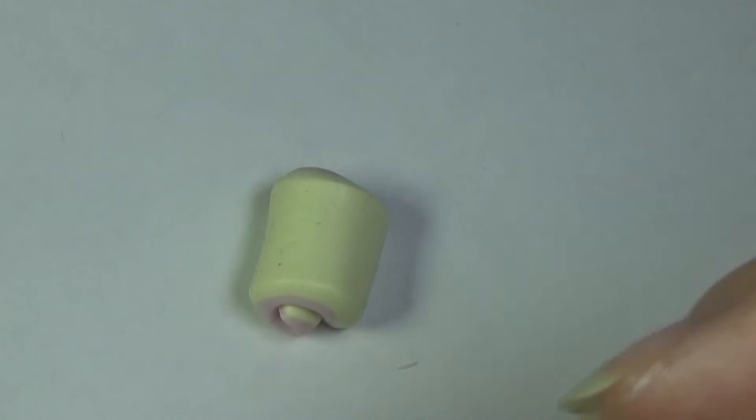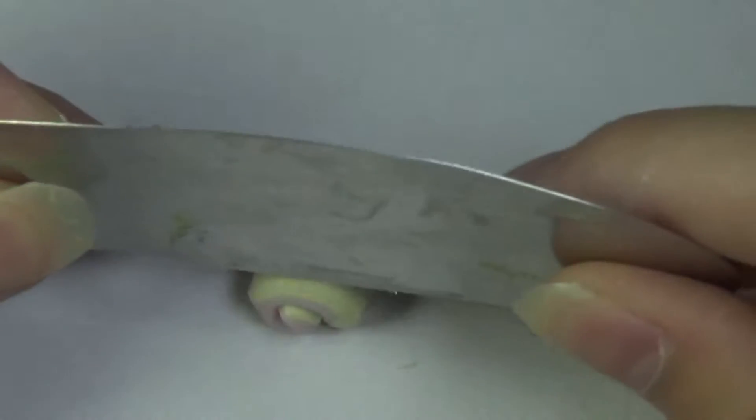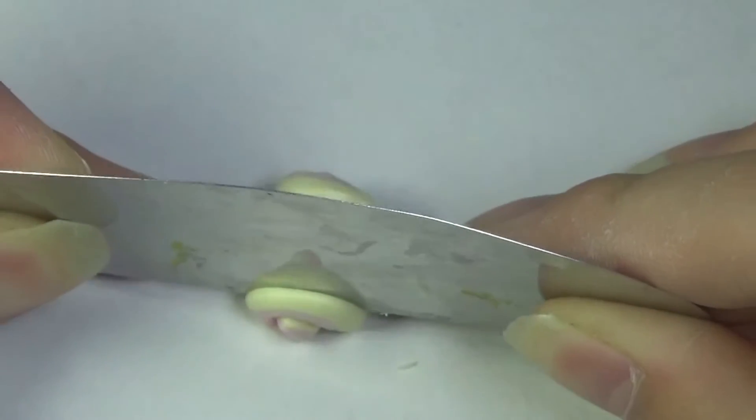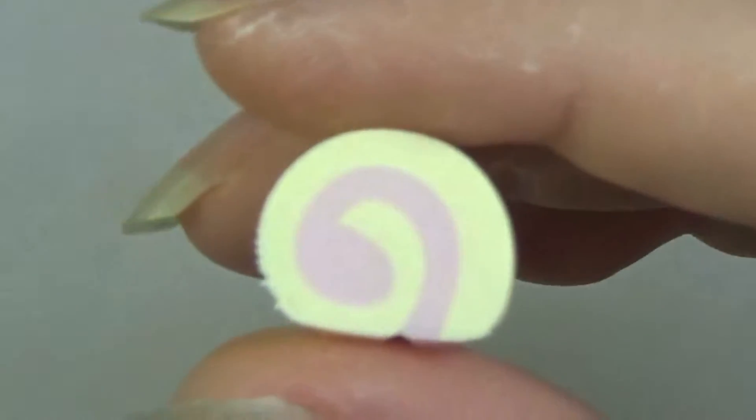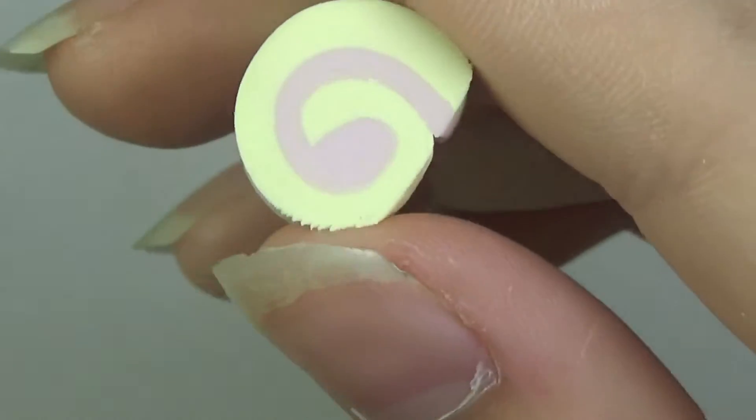And then cut the ends off. Now if you used a little bit more clay than me, then you'd be able to make different slices. But I just used only a small amount because I wanted to make one charm just to show you all how to do it.